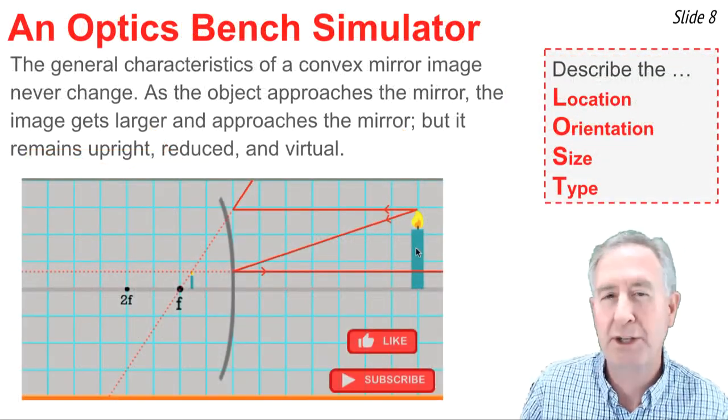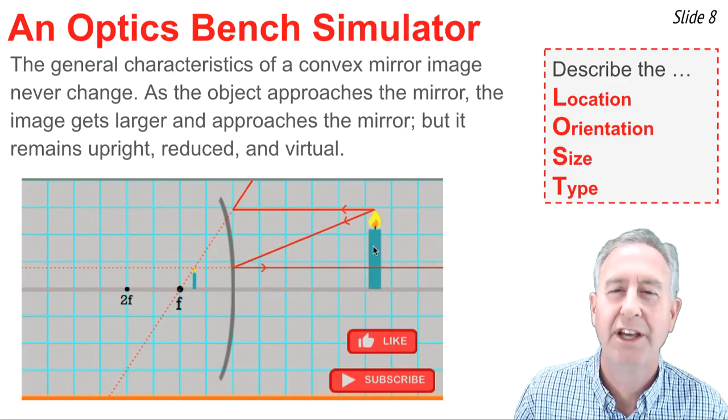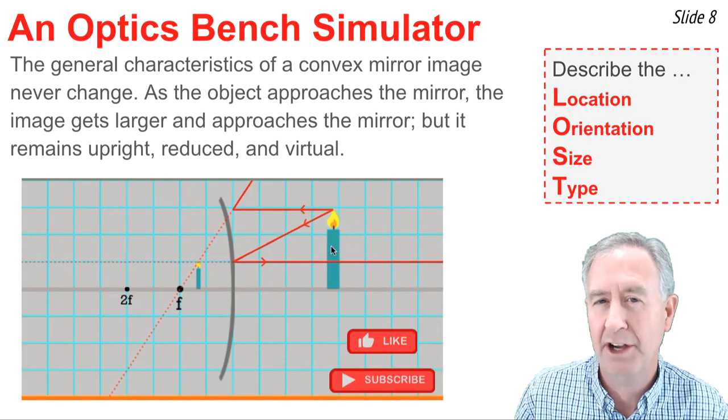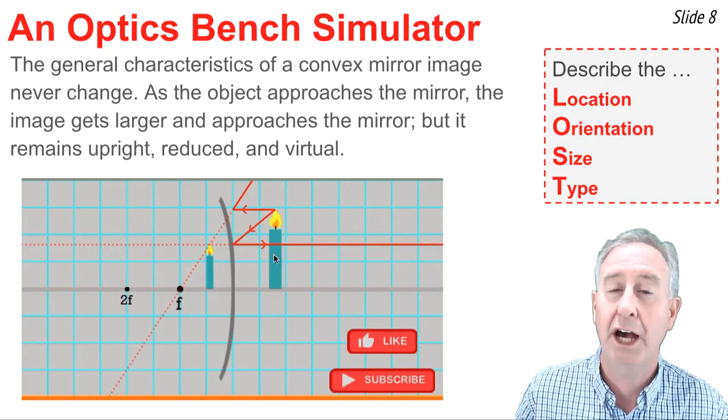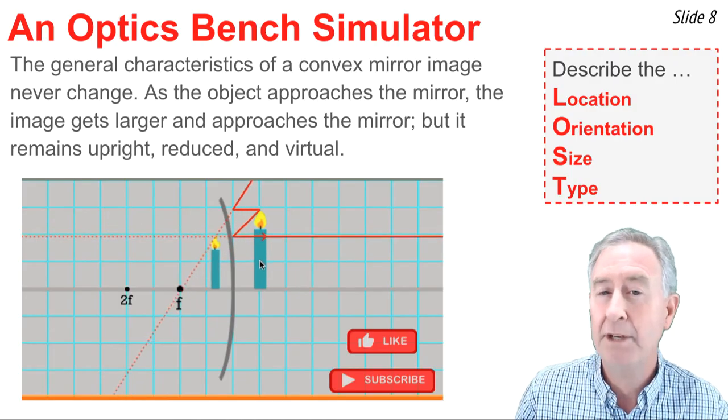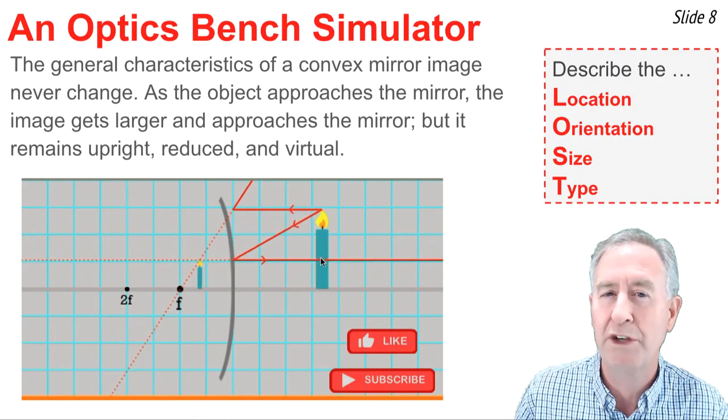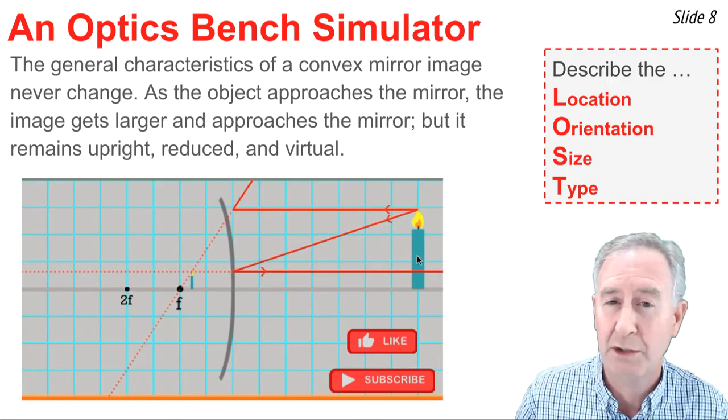This is the Optics Bench Simulator from our website. I've left a link in the description section. The candle that my mouse is on, on the right side of the convex mirror, is the object. On the opposite side, the left side, you'll see the image of this candle. I'm going to take the candle and slowly move it towards the mirror and back. You can observe the image as I do so.